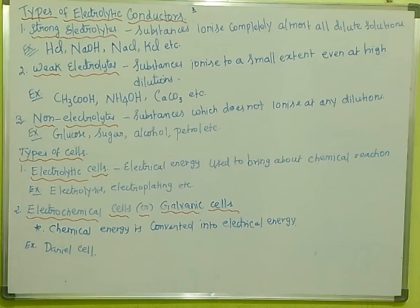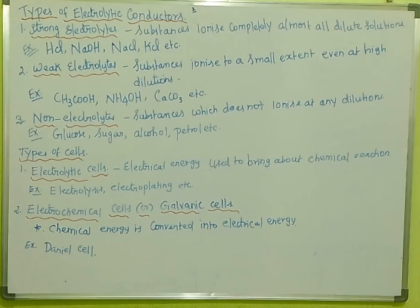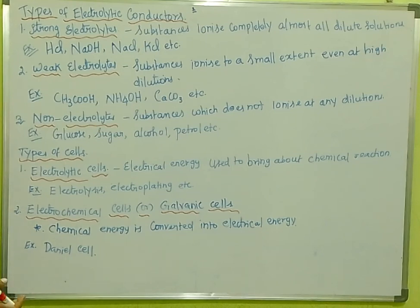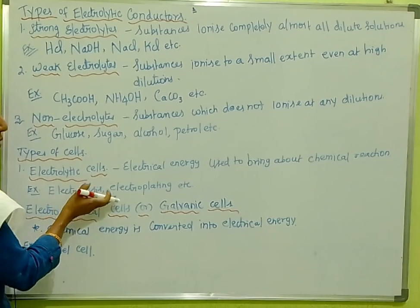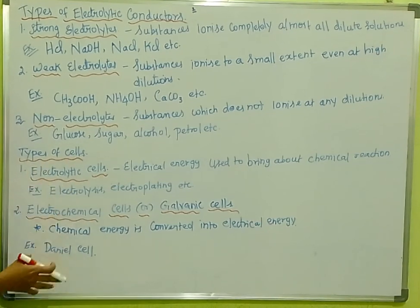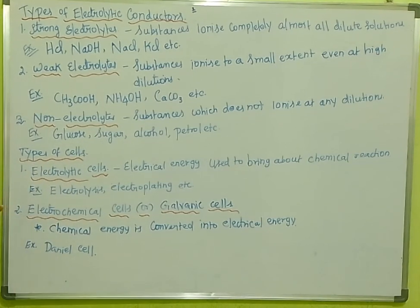In an electrolytic cell, electrical energy is used to bring about a chemical reaction. Examples of electrolytic cells include electrolysis and electroplating.